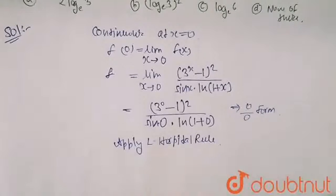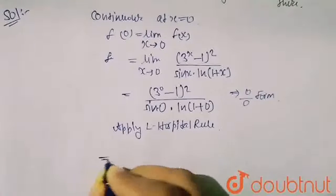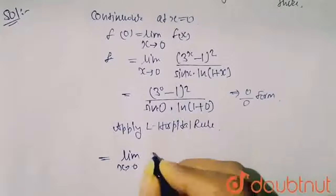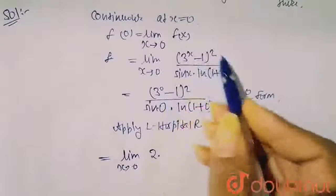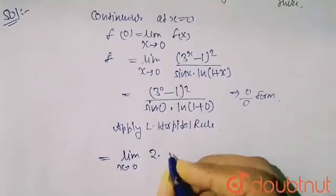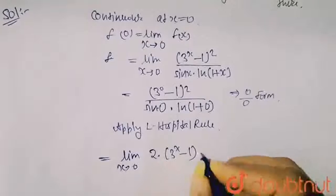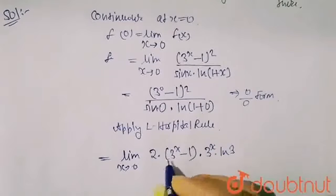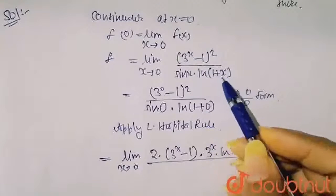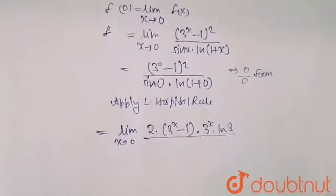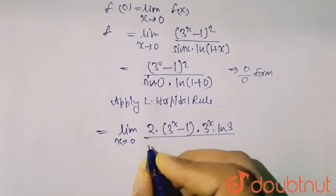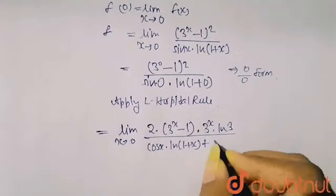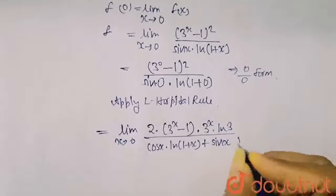Apply L'Hôpital's rule. Taking the limit x tends to 0, I differentiate the numerator: the differentiation of (3^x - 1)² gives 2(3^x - 1) · 3^x · ln 3. For the denominator, sin x · ln(1 + x), I apply the product rule: cos x · ln(1 + x) plus sin x · (1 upon 1 + x).